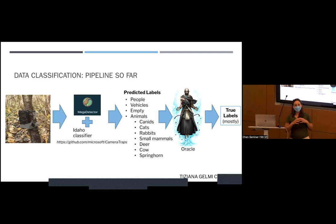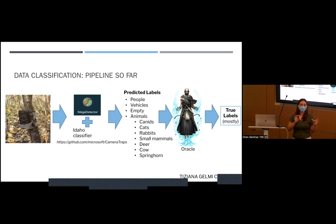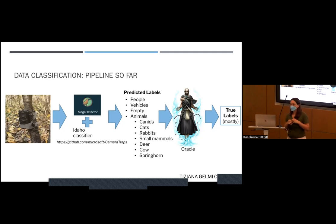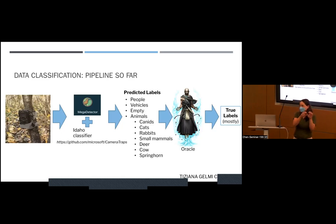This came with a lot of data — we collected around one and a half million photos in one year, and we still have another year coming that's already ending this summer. So far our pipeline has been: collect data, then send it to Dan Morris. Dan Morris sends us a JSON file, and then we proceed.